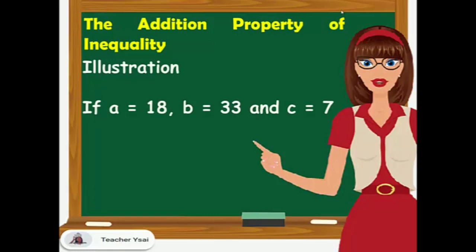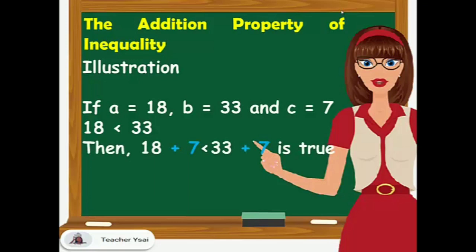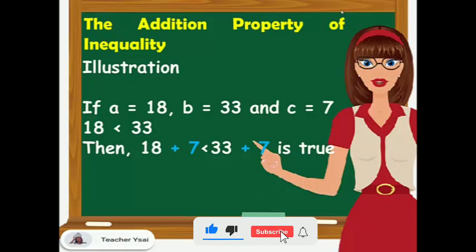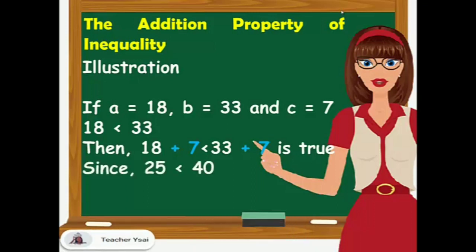And we know that 17 is greater than 13. Another example: if A equals 18, B equals 33, and C equals 7, we know that 18 is lesser than 33. If we add 7 to both sides of the inequality, we have 18 plus 7 is lesser than 33 plus 7, which is true since 18 plus 7 is 25 and 33 plus 7 is 40, and 25 is lesser than 40.